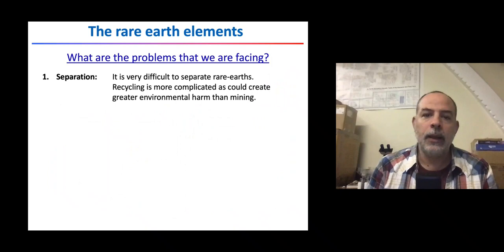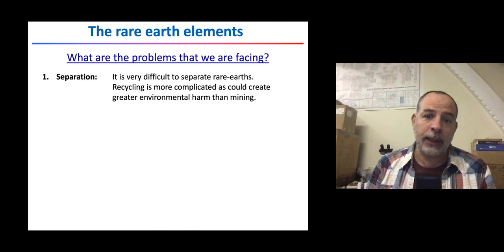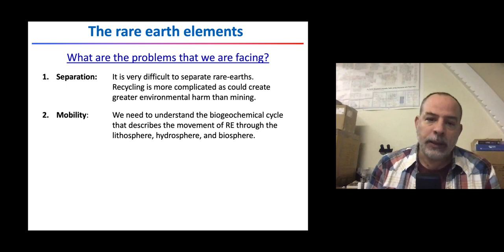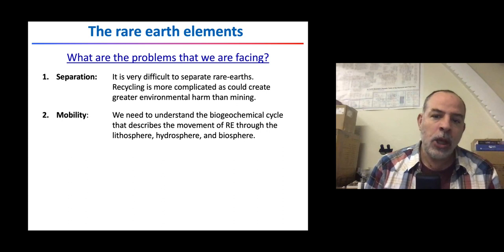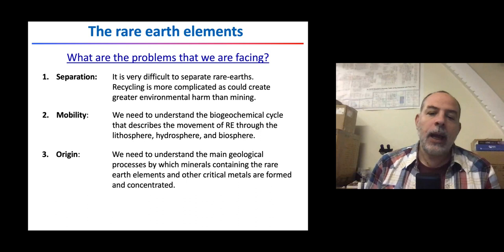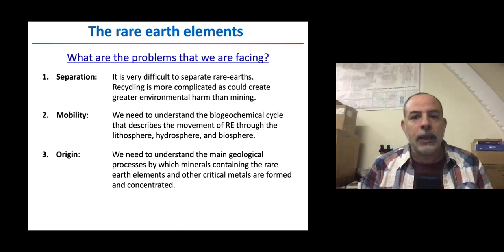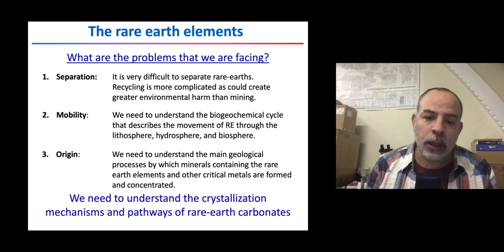There are three main problems when dealing with rare earth elements. First is separation: industry requires the use of individual rare earth elements, but they are very difficult to separate because they have very similar chemical properties, and recycling creates a lot of environmental harm, more than mining. Second is mobility: we need to understand the biogeochemical cycle describing the movement of rare earths through the lithosphere, hydrosphere, and biosphere. Third is understanding their origin — what geological processes form rare earth-containing minerals and how these elements are concentrated.